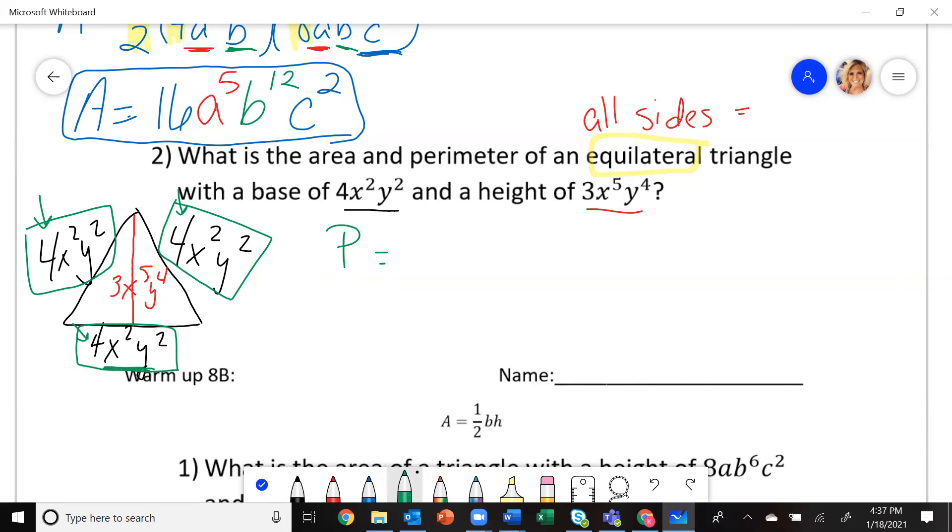4, 8, 12. You should have gotten 12 X squared, Y squared.